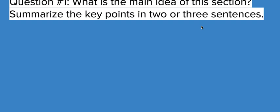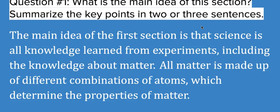We always want to find the main idea, not just the example that is used. So here in this unit we talk a lot about the zebrafish and the International Space Station and the experiments on them, but that's not really the main idea. We have to dig a little deeper. The main idea of this section is that science is all knowledge learned from experiments, including all the knowledge about matter. Matter is made up of different combinations of atoms which determine the properties of matter. We see both matter and experiments being discussed through that zebrafish example.